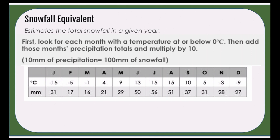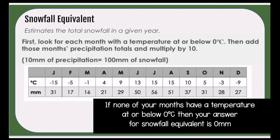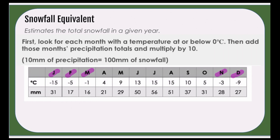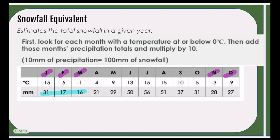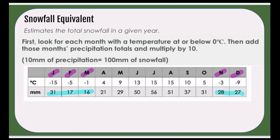For snowfall equivalent, we're looking for the months where there is a temperature at or below zero degrees Celsius. The months that have a temperature of zero or lower are January, February, March, November, and December. We're actually going to be paying attention to our precipitation totals. I always say to students to highlight or circle them so it can be a little more visual. In this case, we're going to be adding up 31 plus 17 plus 16 plus 28 plus 27, and that's going to give us a total of 119.